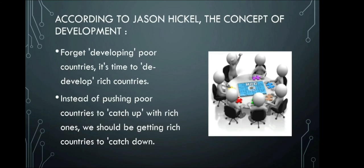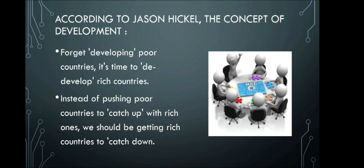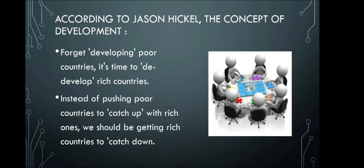According to Jason Hickel, the concept of de-development talks about forgetting developing poor countries — it's time to develop rich countries instead. Rather than pushing poor countries to catch up with rich ones, we should be getting rich countries to catch down. Because poor countries struggle to access resources for development, his idea is: if small, poor countries find it hard to develop, why shouldn't the bigger, richer countries be the ones to de-develop?